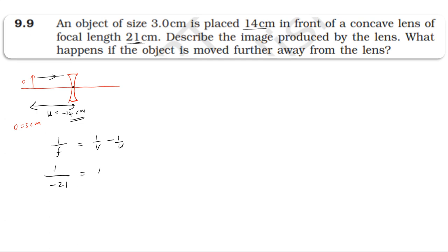Applying the lens formula: 1/f = 1/v minus 1/u, where u is minus 14 cm. So 1/v = 1/f + 1/u = minus 1/21 plus 1/u. Since u is minus 14, this gives 1/v = minus 1/21 minus 1/14.